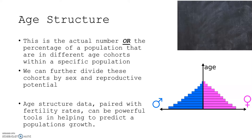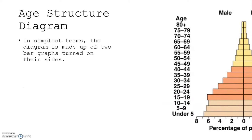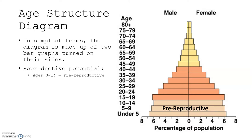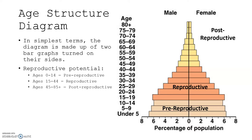Let's take a look at an age structure diagram. In simplest terms, the diagram is made up of two bar graphs turned on their sides. Reproductive potential is measured in the group of ages 15 to 44. Ages 0 to 14 are pre-reproductive, 15 to 44 is reproductive, and 45 to 85 and higher is post-reproductive. Males are represented on the left side, females on the right side, with percentage of the population at the bottom and ages on the side.